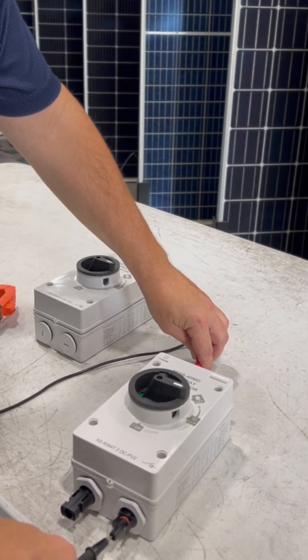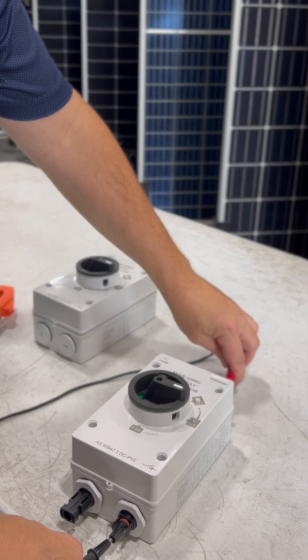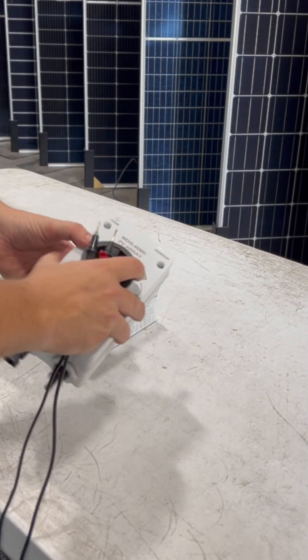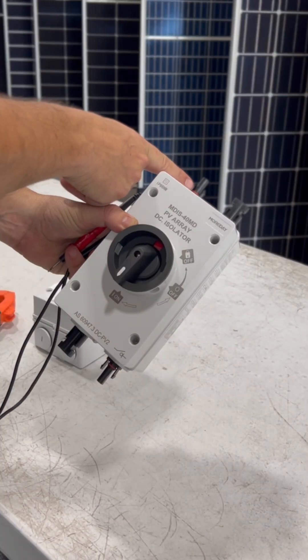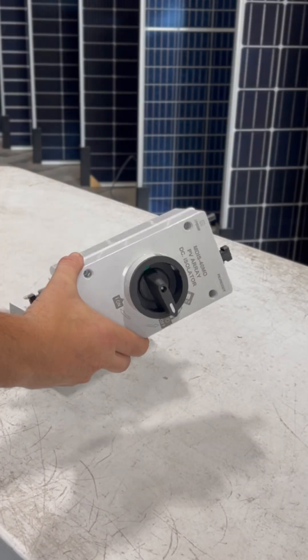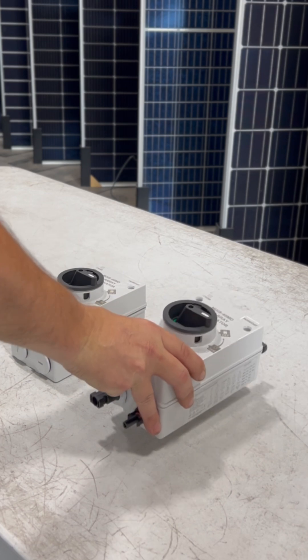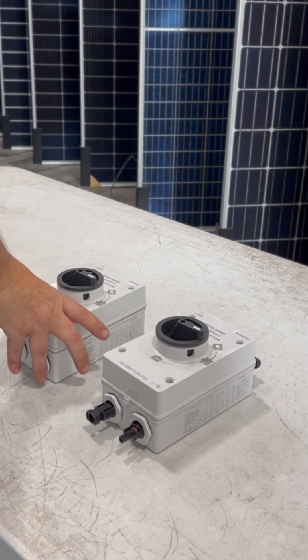And that's the MC4 disconnect. It's a simple, reliable option when you're not running conduit. Always remember to check continuity with the switch on and confirm your positive and negative inputs before wiring. With a quick test, you can be sure that your connections are correct and the polarity is preserved.